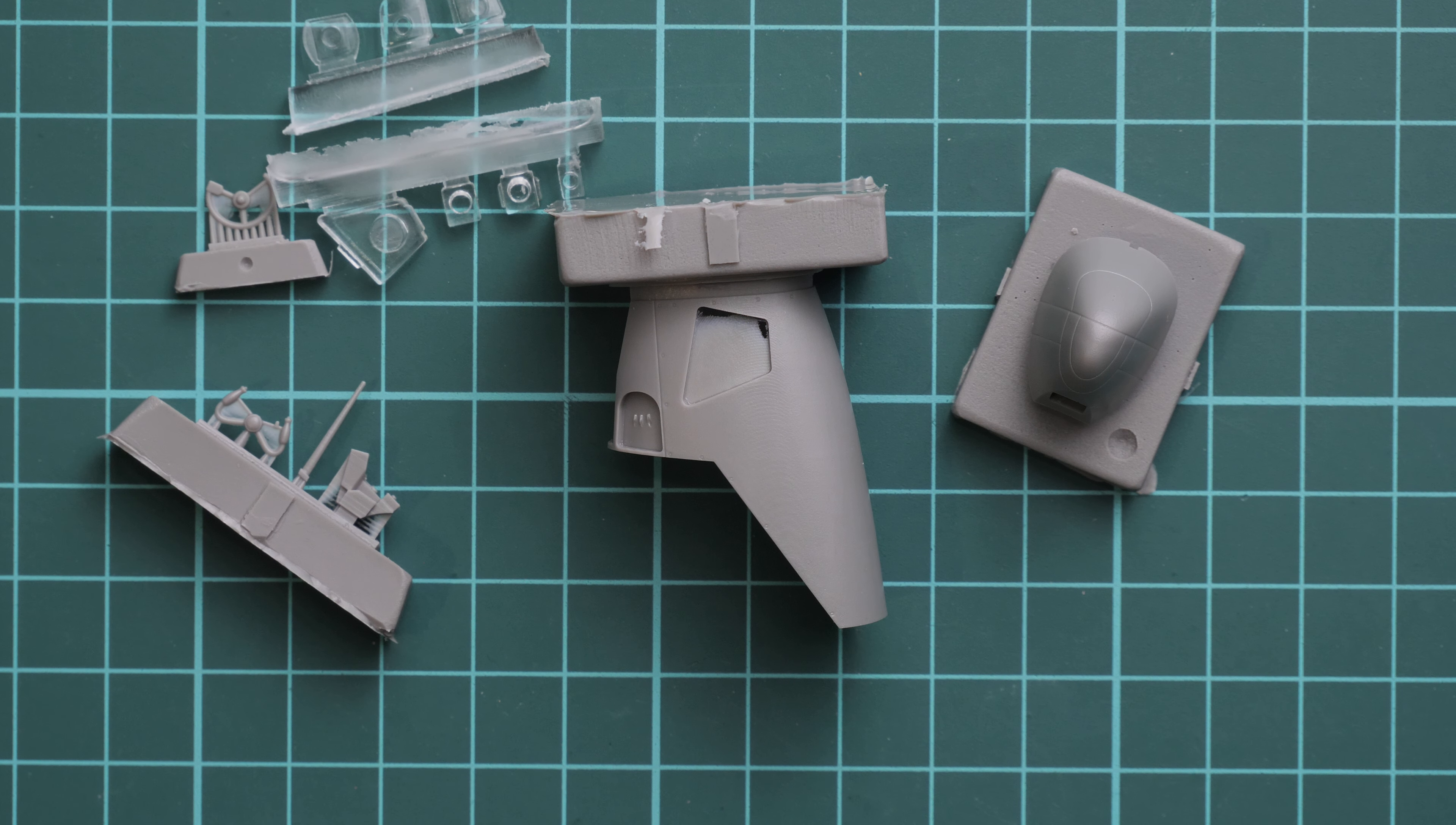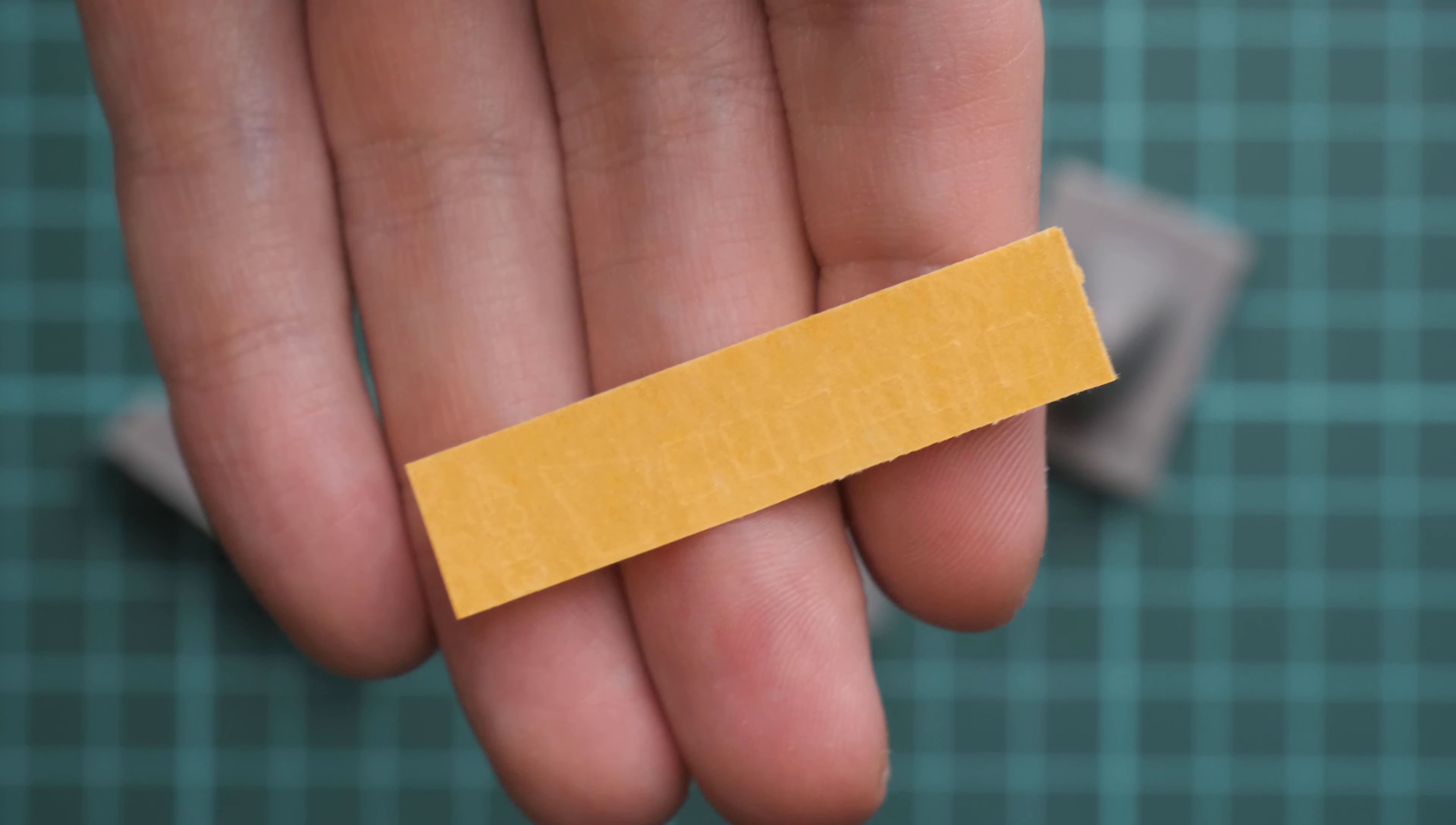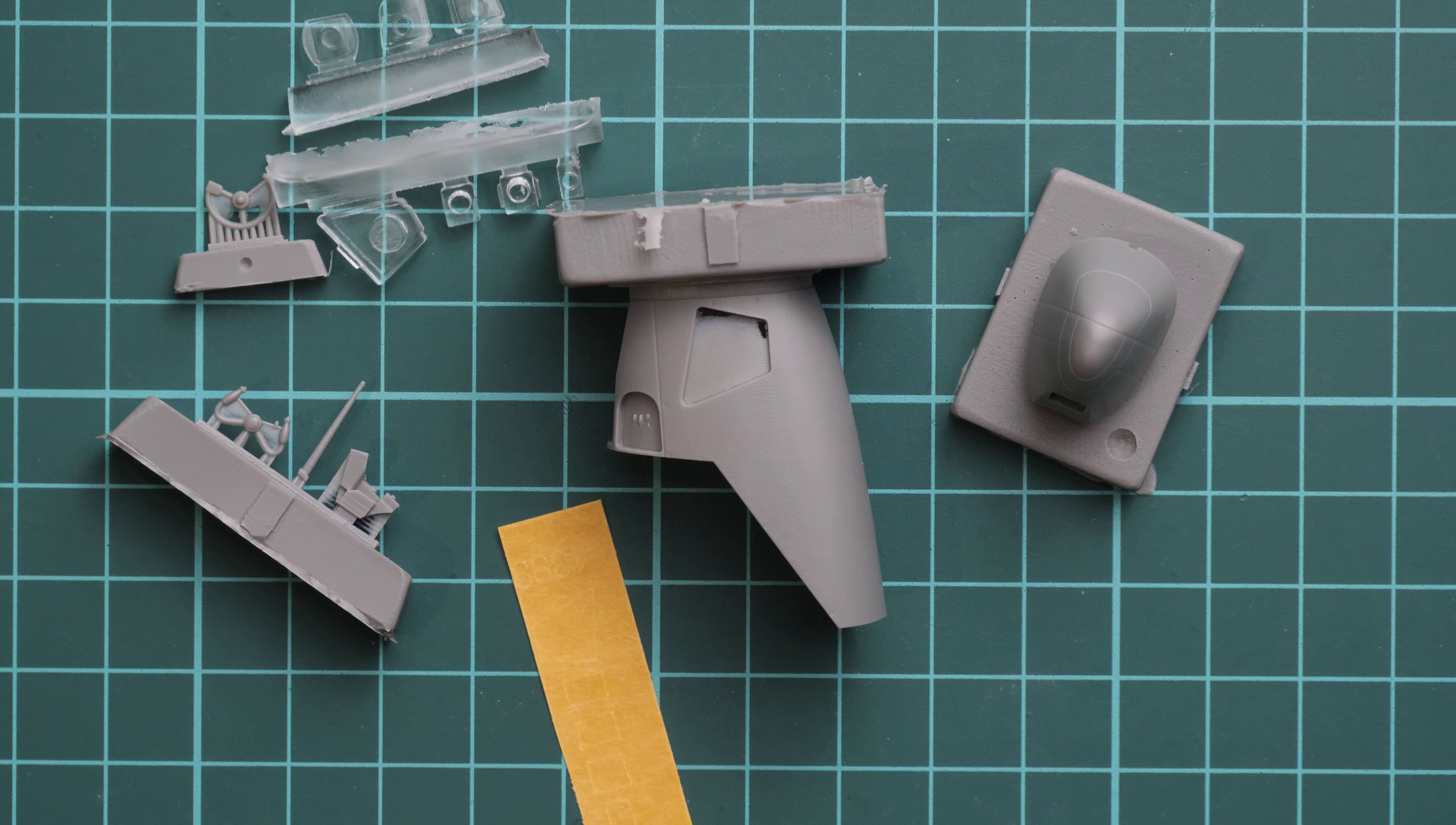Next we have decals and masks. These are pre-cut masks and they'll be handy for the clear areas of the aircraft, which is really cool because you get everything you need out of the box. You won't have to think how to cover these clear areas in the nose section.